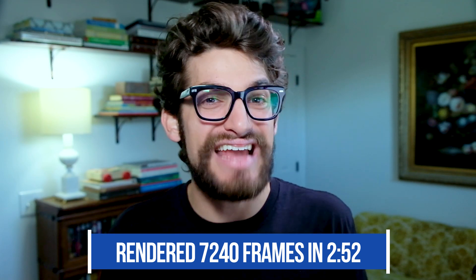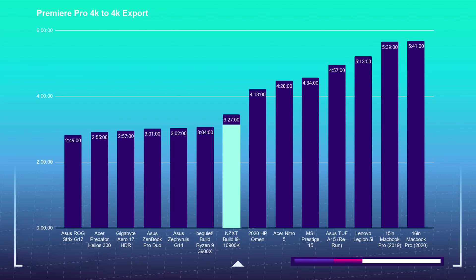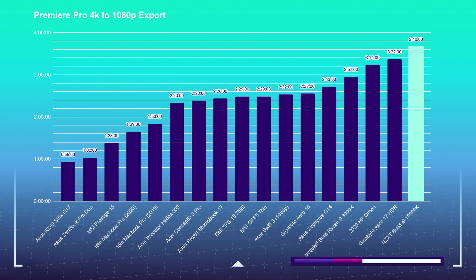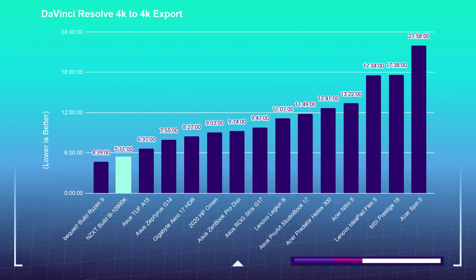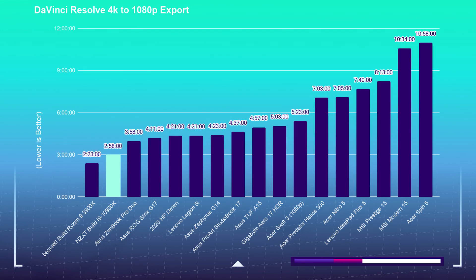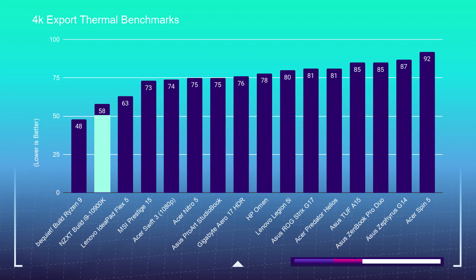Moving on to the 4K export test — I'm going to take a 9-minute 4K clip, place it into Premiere Pro and DaVinci Resolve (using the free version), then export both out at 1080p and 4K YouTube settings. The 10900K did the 4K to 4K export out of Premiere Pro in 3 minutes and 27 seconds, and the 1080p export in 3 minutes and 40 seconds. The DaVinci Resolve 4K to 4K export took 5 minutes and 11 seconds, and the DaVinci Resolve 4K to 1080p export took 2 minutes and 58 seconds. As many of you will want to know, the NZXT build with its 10900K stabilized during the 4K export at 58 degrees Celsius and reached about 48 decibels of system noise during that export.